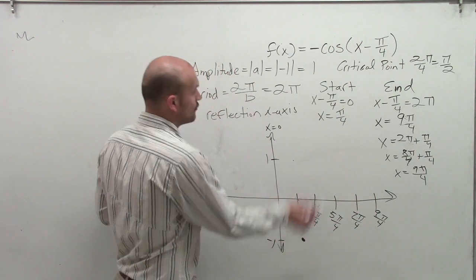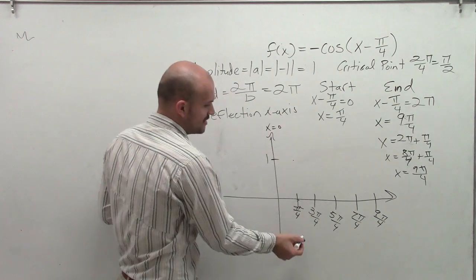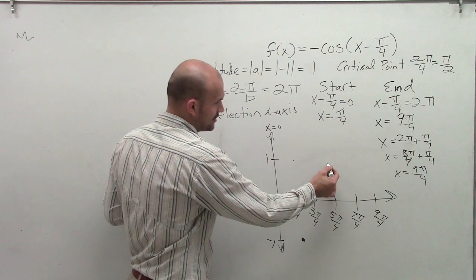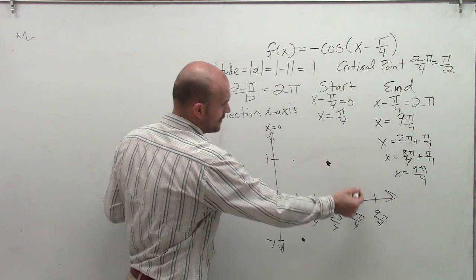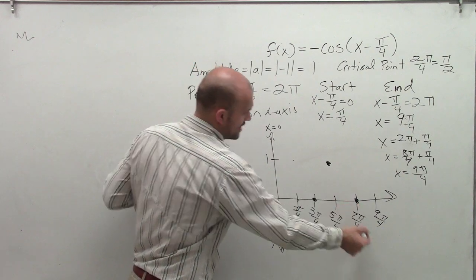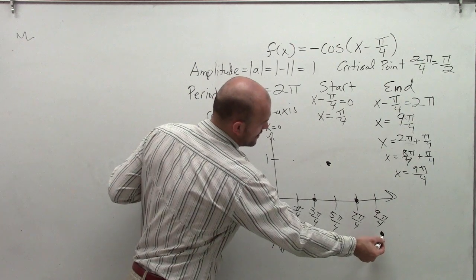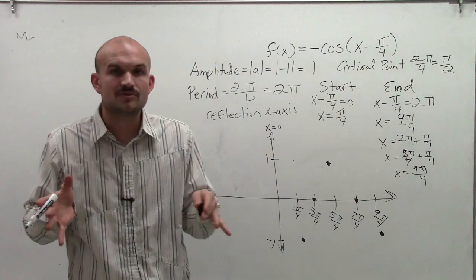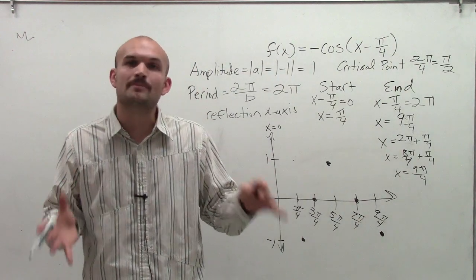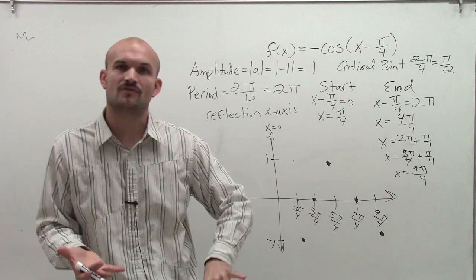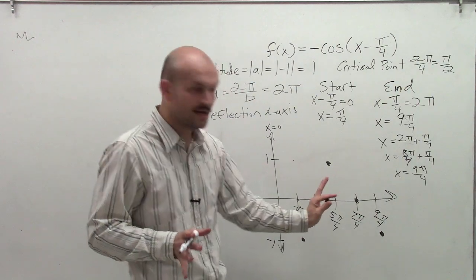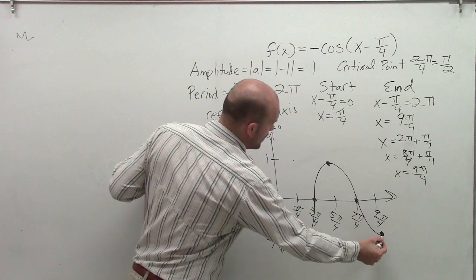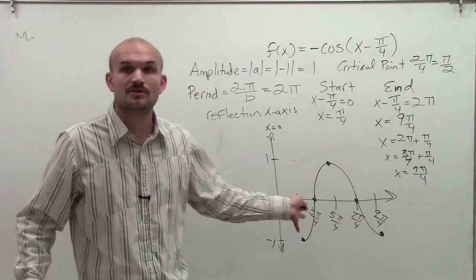So I'm going to start down at negative 1 because of the reflection of the x-axis. My next critical point is going to be my x-intercept. Then I'm going to go to a max value of positive 1, back down to my x-intercept, and then go over, down, back down to negative 1. And the reason why I know each one of these hit because all I'm using is the idea of what the parent graph looks like reflected over the x-axis and now shifted pi over 4.